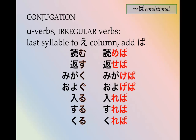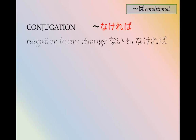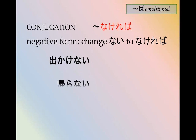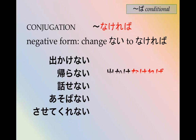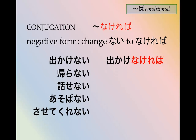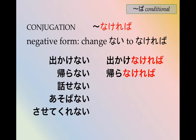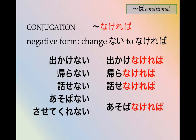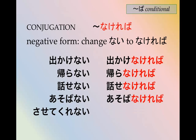する and くる follow the regular rules for the ば form. For the negative ば form, regardless of verb type, change the nai ending to nakereba: 書かなければ, 買わなければ, 話せなければ, 遊ばなければ, さすってくれなければ.